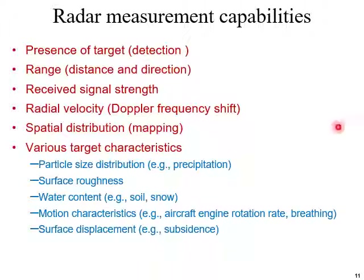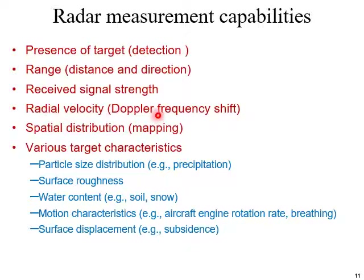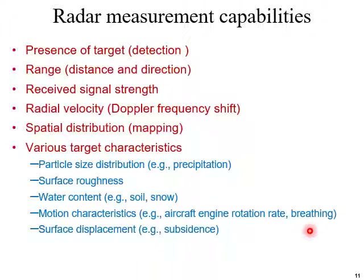Radar measurement capabilities include: first, detection — the presence of a target. It also measures the range of the target, that is distance as well as direction. Received signal strength is useful for understanding target properties. Radial velocity can be measured with the help of Doppler frequency shift. Spatial distribution like mapping, various target characteristics like particle size distribution, precipitation, surface roughness, water content of soil and snow, motion characteristics like aircraft engine rotation rate, breathing, and surface displacement — for example, subsidence.